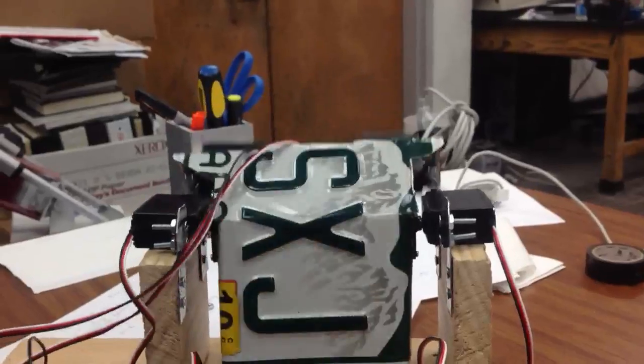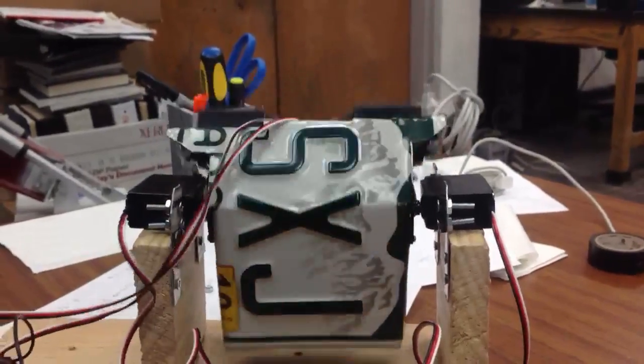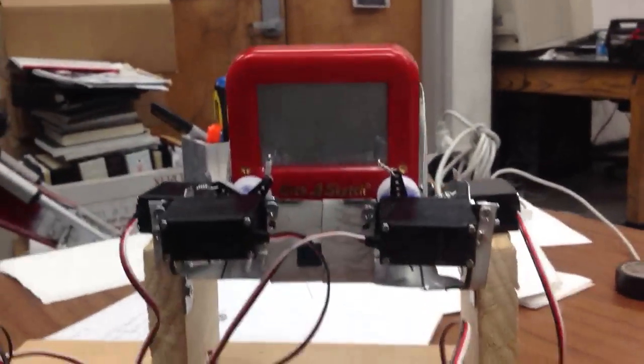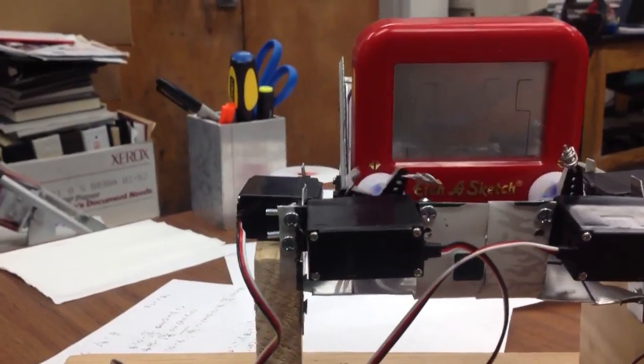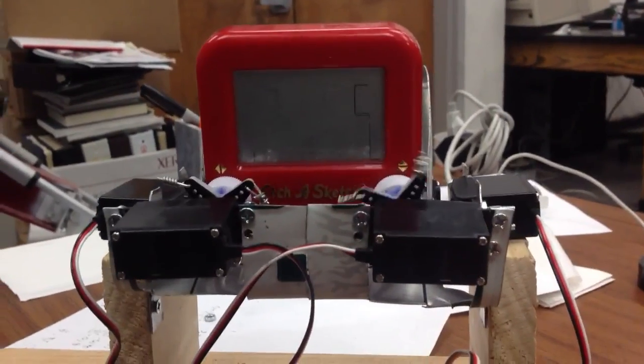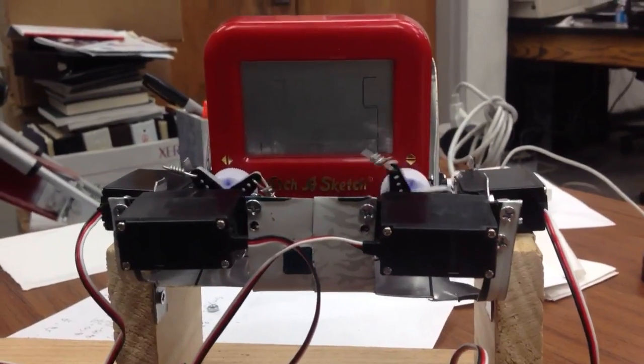So this is a pocket Etch-a-Sketch that on the front of the Etch-a-Sketch there are two continuous servo motors, and on either side of the Etch-a-Sketch are two standard servo motors.